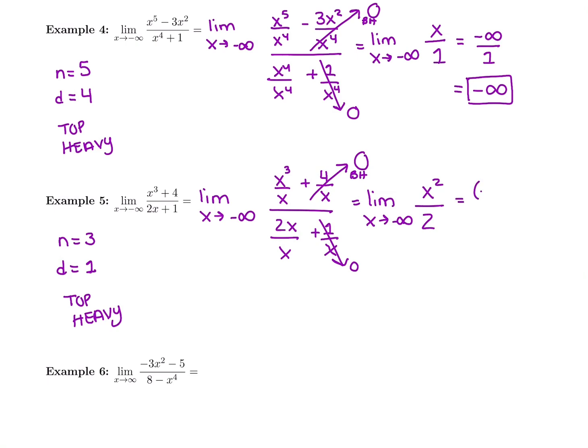Now plug into this — you're plugging in negative infinity, because that's what the limit is going to. You're going to square it and then divide by 2. What's the final answer? It's top-heavy, so it's either infinity or negative infinity. Well, negative infinity squared — negative infinity times negative infinity — is positive infinity. Divided by 2 stays at positive infinity. Any negative number squared makes it positive.